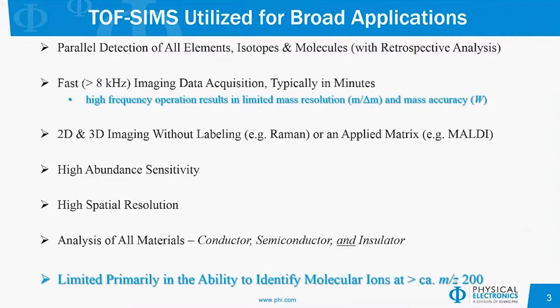TOF-SIMS is a fast imaging technique. Typically you can collect images of the surface in a matter of minutes. Two-dimensional as well as three-dimensional imaging is possible without labeling, as would be done in Raman, or without an applied matrix, as is necessary in MALDI mass spectrometry. SIMS is very sensitive and we achieve quite high spatial resolution — down below 100 nanometer spatial resolution is possible. TOF-SIMS can look at any material, whether it's an insulator, conductor, or semiconductor.